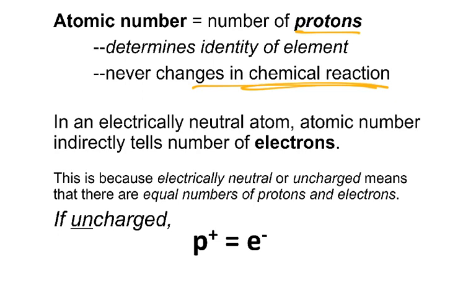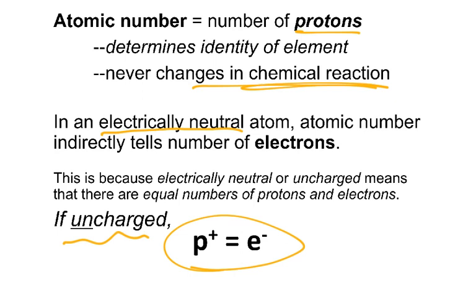The second big idea is the term electrically neutral. Electrically neutral means uncharged, and if an atom is uncharged, it is so because the number of protons is precisely equaled by the number of electrons. Protons are positive, electrons are negative. The size of the charge is the same but an opposite sign for those two subatomic particles. So if I know the number of protons and the question says I've got an uncharged or electrically neutral atom, I know that the number of electrons is the same as the number of protons.